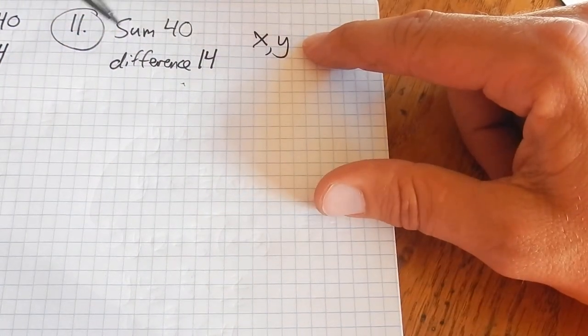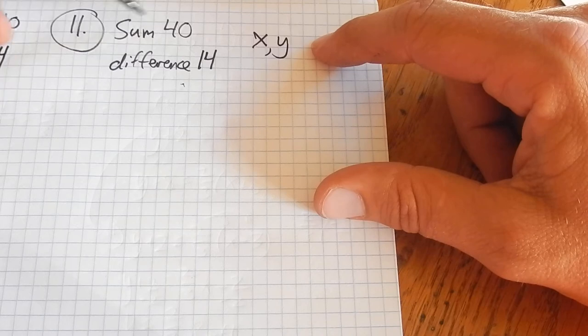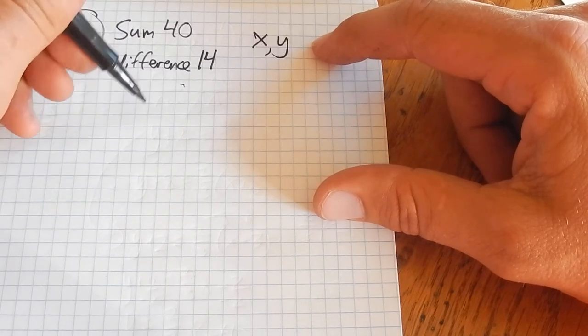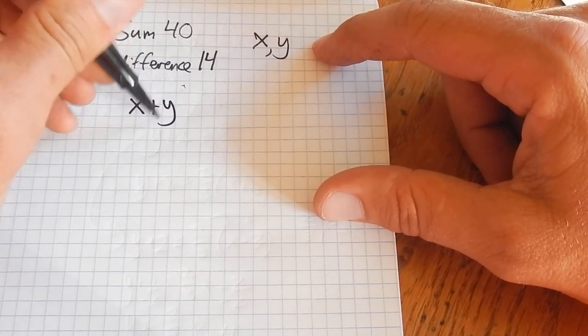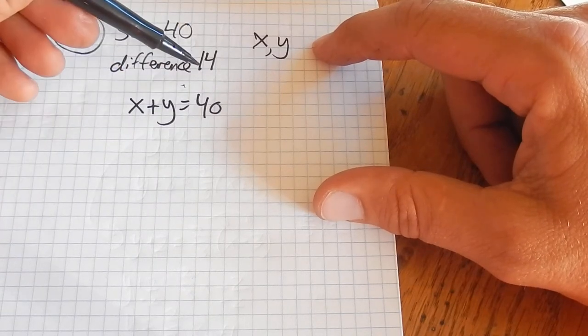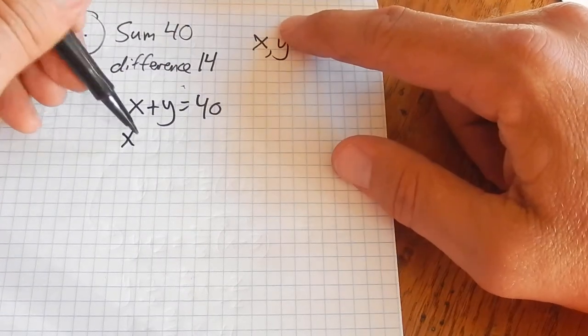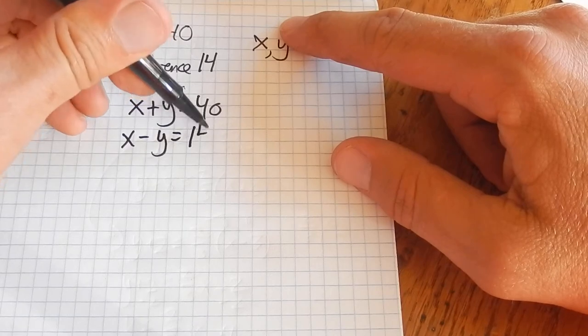And then what I'm going to do is write a system. Their sum is 40. Remember, sum is the answer to an addition problem, so x plus y is 40. Their difference is 14, so x minus y is 14.